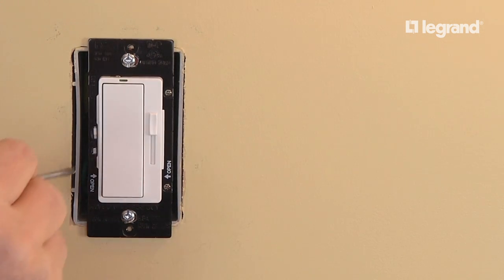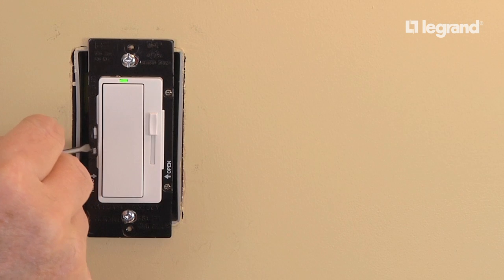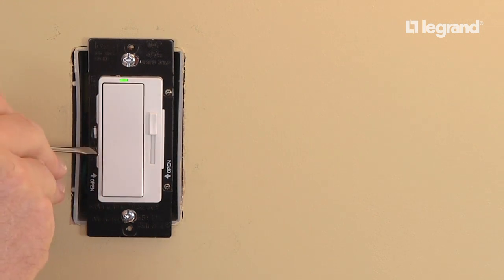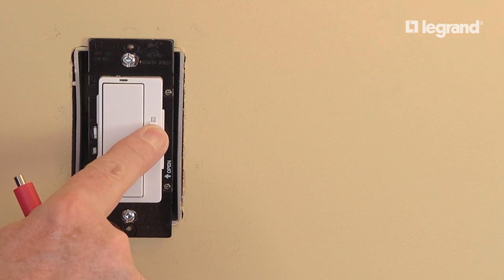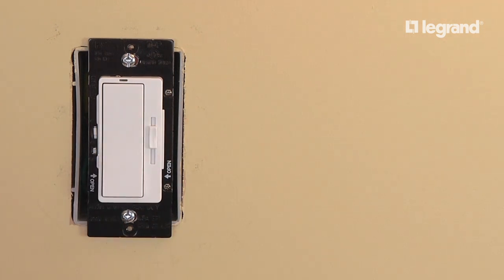While the LED locator light continues to flash, pressing and releasing the calibration button will cycle through 12 preset trim levels. When the desired maximum level is achieved, simply moving the slider will store the selected trim level and exit the manual calibration mode.